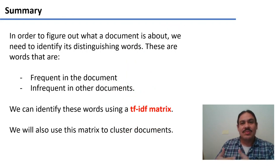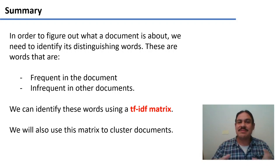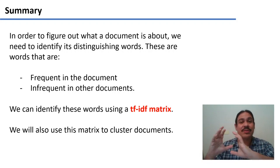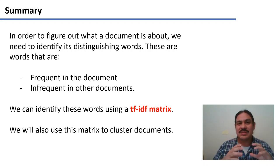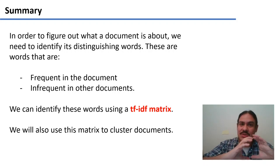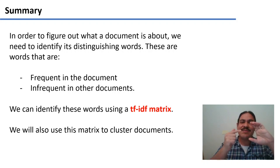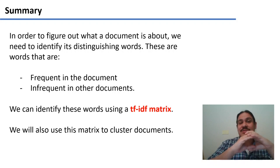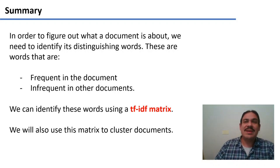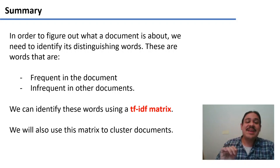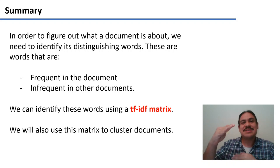In summary, when we are trying to figure out what a document is about, we need to find words that clearly distinguish it from other documents. These words will have two properties: they will be frequent within the document, but infrequent throughout the collection. Whenever a document contains our word, it will be very precious and unique, and well described by that word. We can identify these special words using a TF-IDF matrix, and we can also use this matrix to cluster things together.